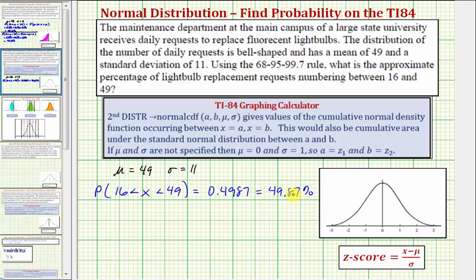Now a second method to find this percentage would be to calculate the z-score for both sixteen and forty-nine. Remember the z-score indicates how many standard deviations a particular data value is away from the mean. So for x equals sixteen, the z-score would be equal to sixteen minus the mean divided by the standard deviation, which is equal to negative thirty-three divided by eleven, or negative three, which indicates that sixteen is three standard deviations below the mean.